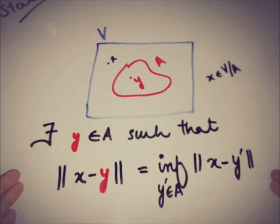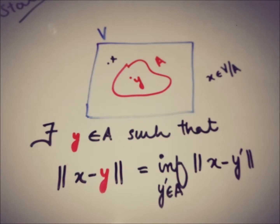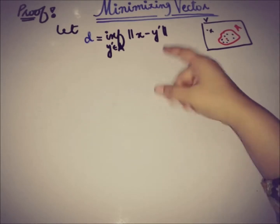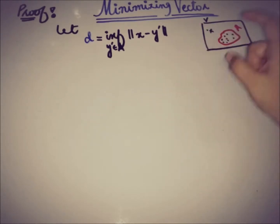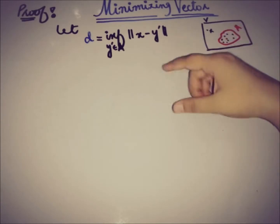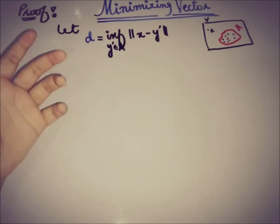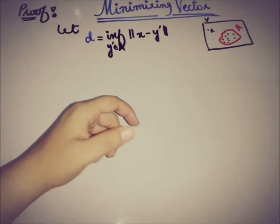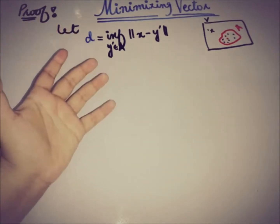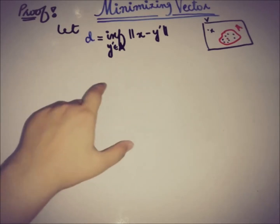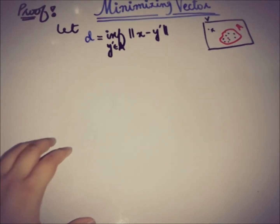Now we are going to prove this. Let D equal the infimum over all Y in A of the norm of X minus Y. We name this infimum D in order to be more compact and precise. The first step is to use the definition of the infimum.